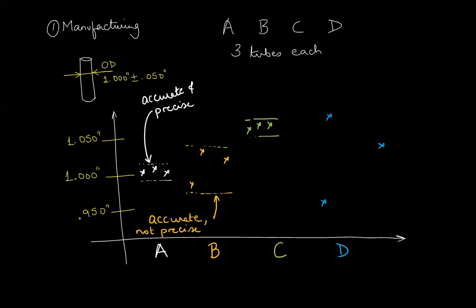Company C on the other hand their ODs are close to each other except they are all outside the tolerance range. Company C therefore is not accurate or inaccurate but precise.